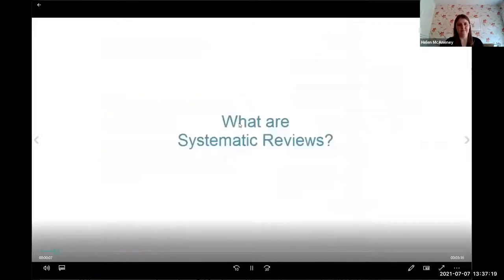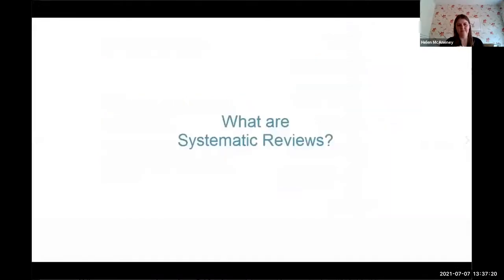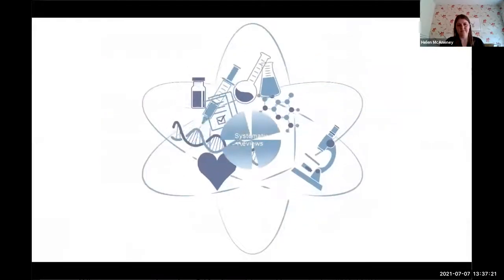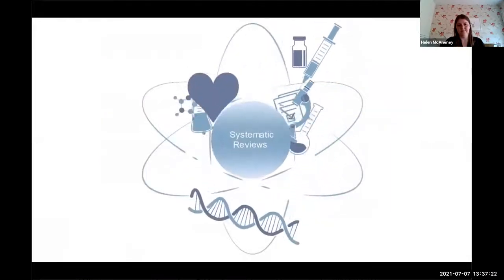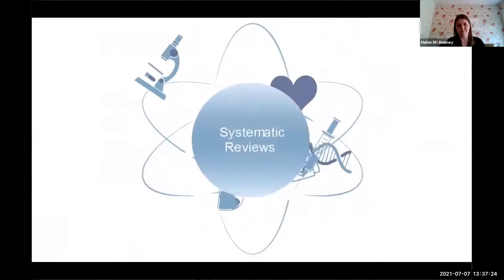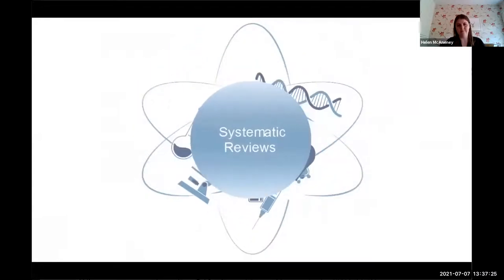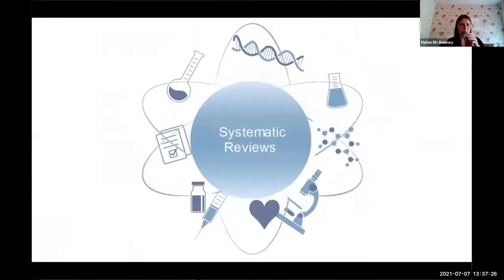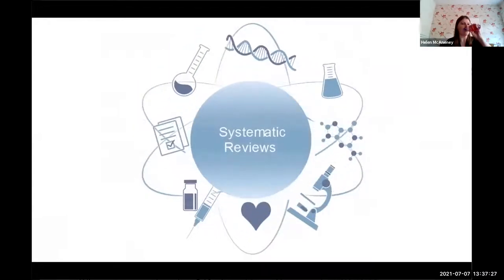What are systematic reviews? Systematic reviews help make sense of many kinds of data. They're a way of reviewing all the data and results from research about a particular question in a standardized, systematic way. A systematic review helps give an objective and transparent overview of all evidence surrounding a particular question.